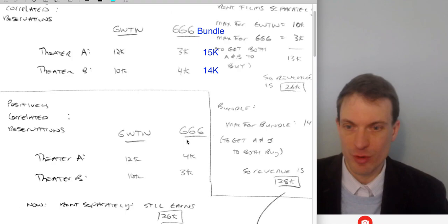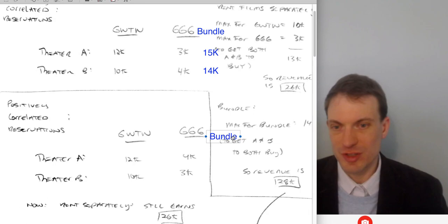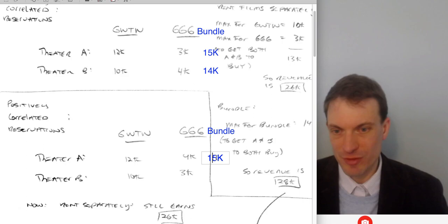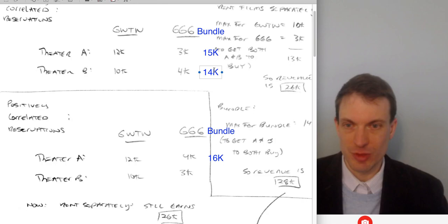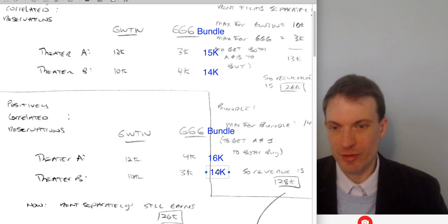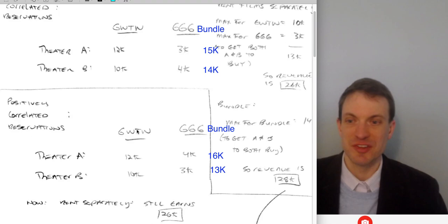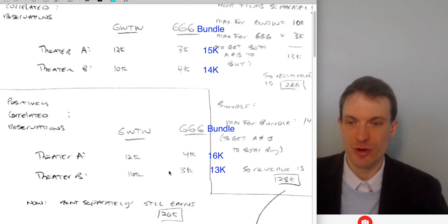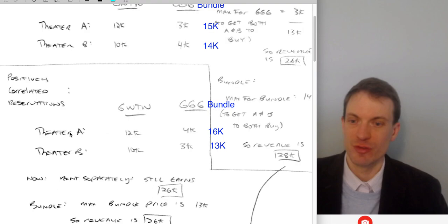What about case two where we have positively correlated reservations? All I did is switch the Getting Gertie's Garter values. If we're renting separately, the same price logic holds — I still have to set Gone with the Wind at 10K if I want both to buy, and Getting Gertie's Garter at 3K if I want both to buy. So my revenue per theater is still 13K, with two theaters giving total revenue of 26K renting separately. That's the same whether we have negatively or positively correlated reservations.